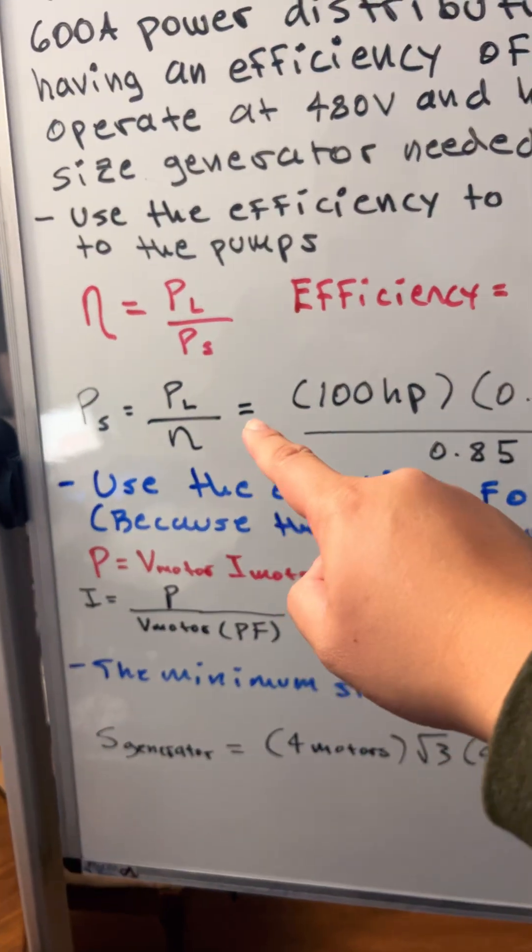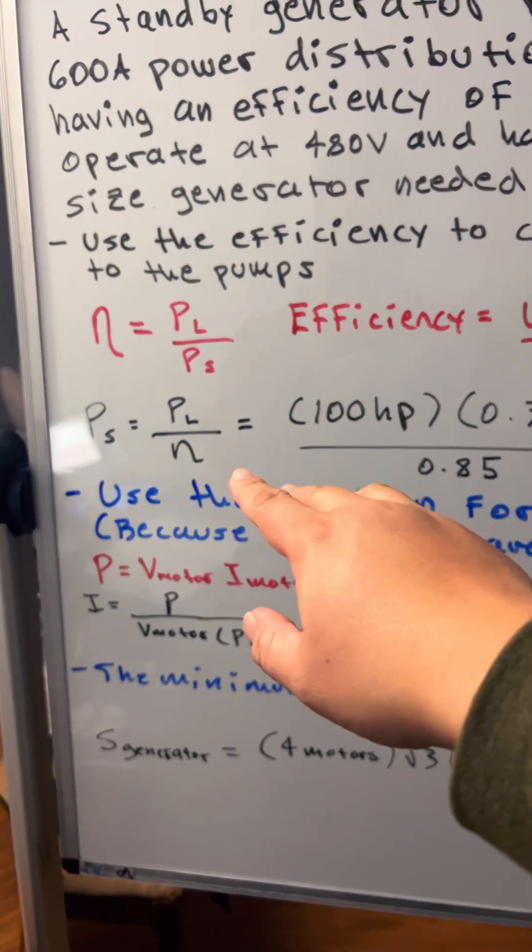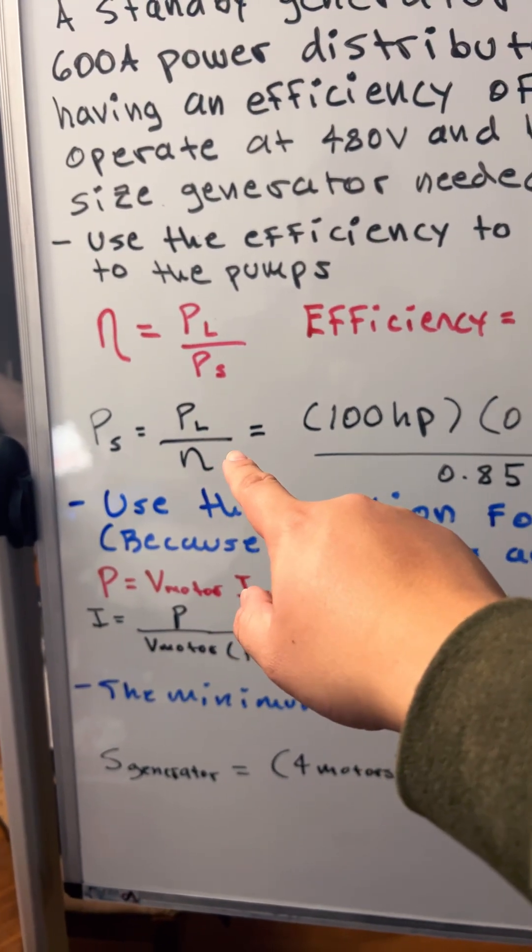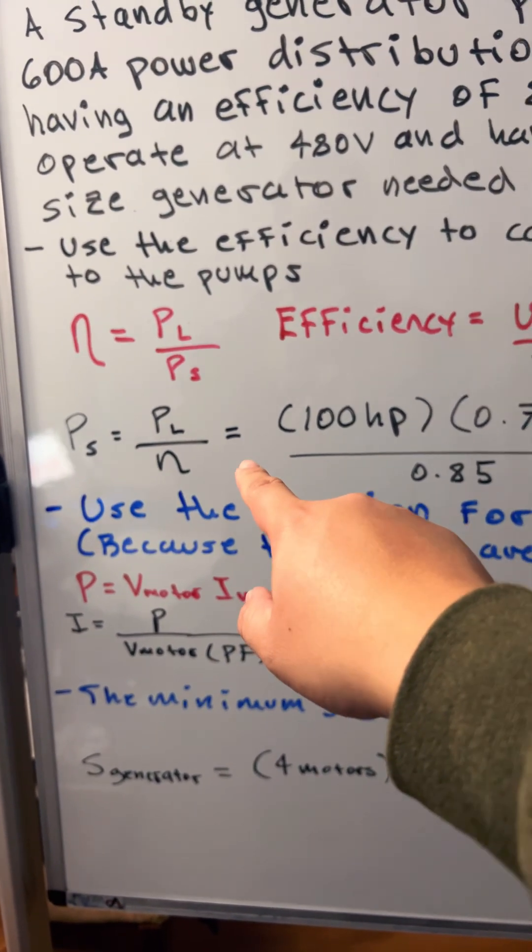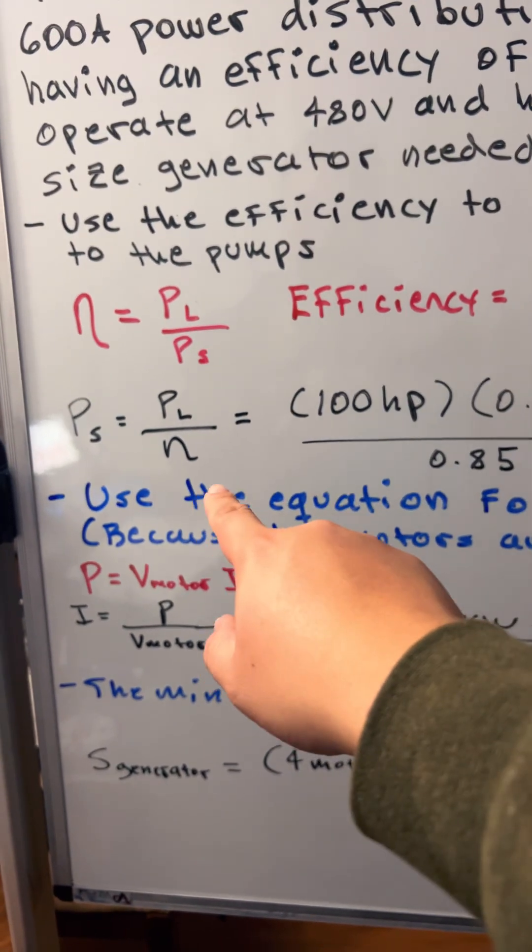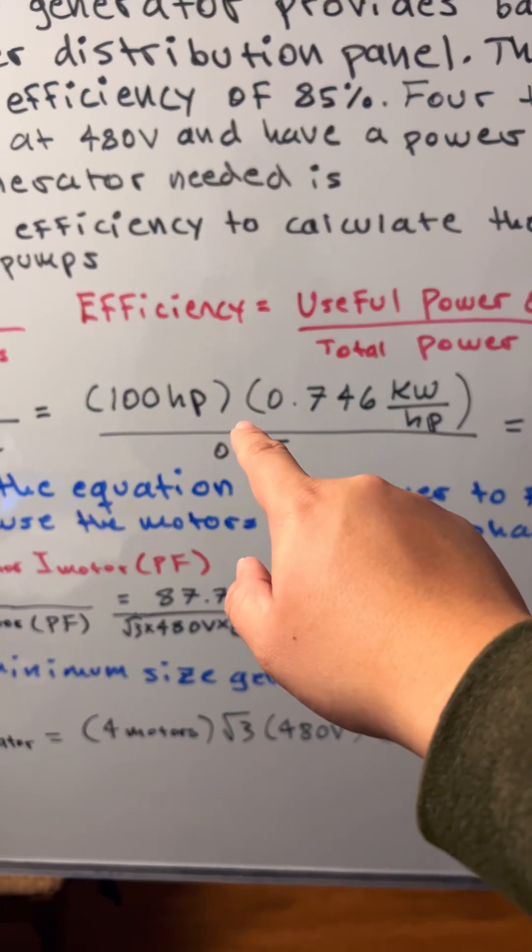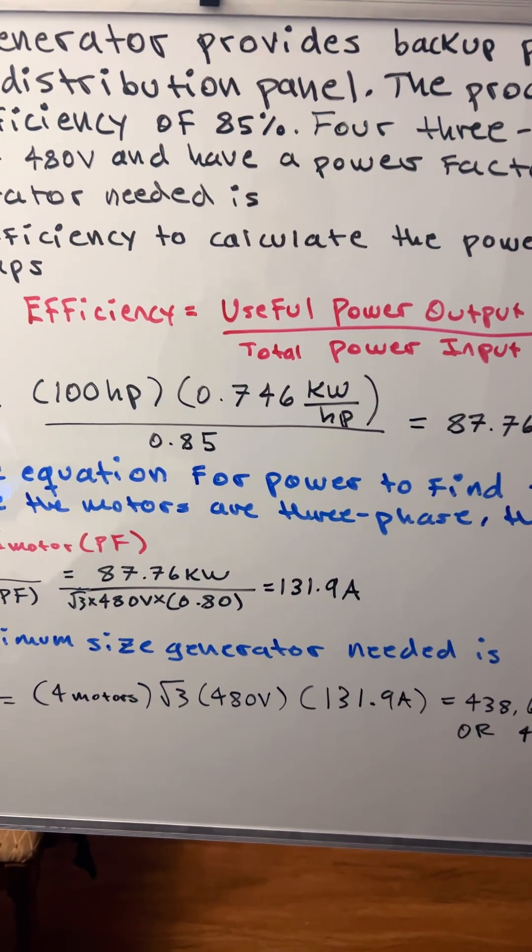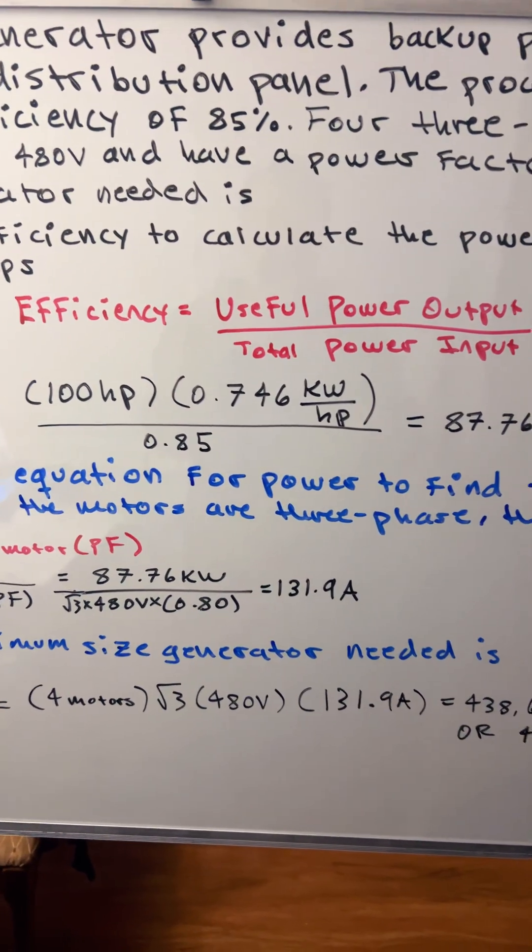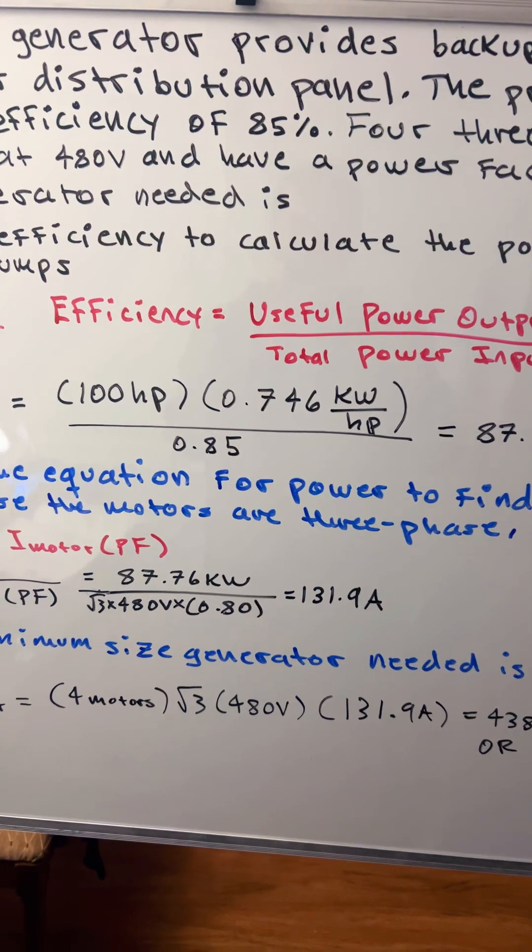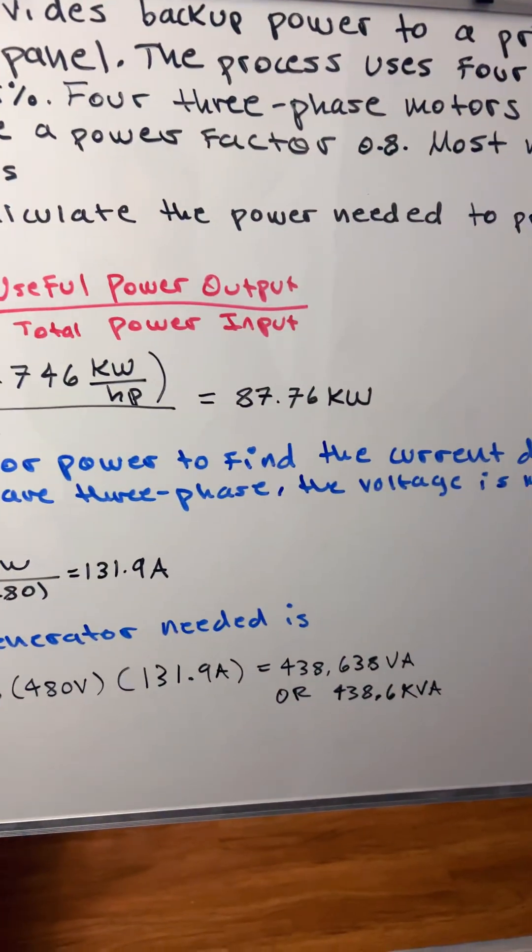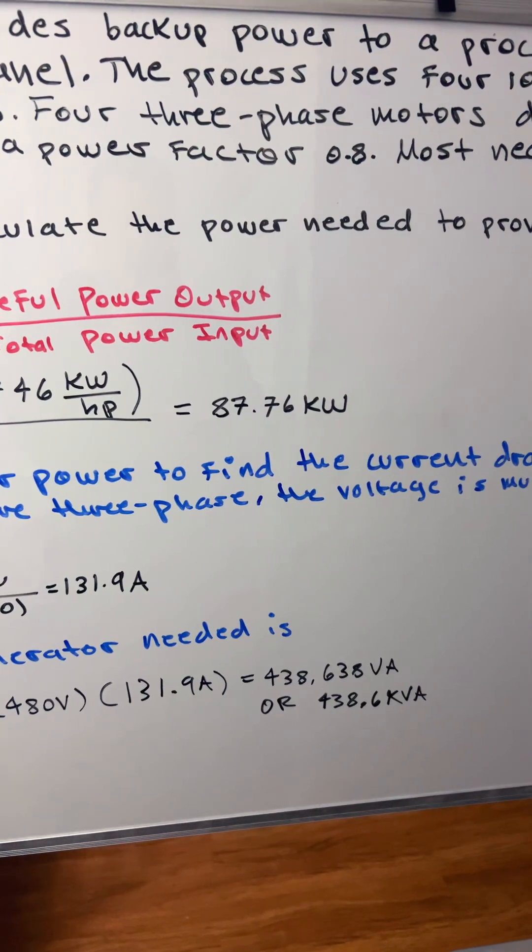We're going to rearrange the equation for total power input equals useful power output divided by efficiency. So it would be 100 horsepower times 0.746 kilowatts per horsepower divided by the efficiency 0.85, and that gives us 87.76 kilowatts.